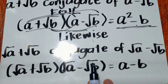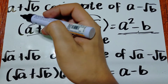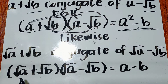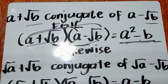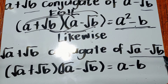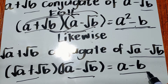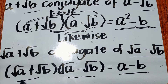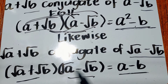Likewise, in the first form, only b has the radical. But if both terms have radicals — square root of a plus square root of b is the conjugate of square root of a minus square root of b — then the result of multiplying them is simply a minus b. If you forget, use the FOIL method.